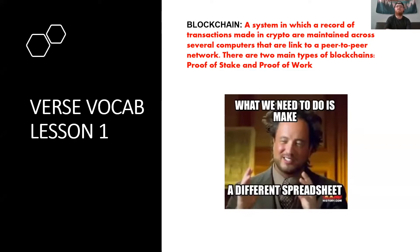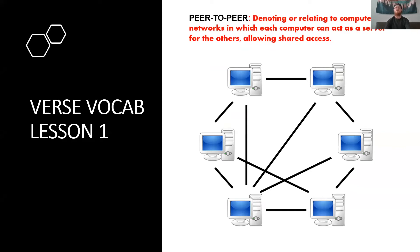There are two main types of blockchains — proof of stake and proof of work — which we'll get into in a later video. Basically what you need to know is that these blockchains act as large spreadsheets held together by computers connected in a peer-to-peer network. In a peer-to-peer network, each computer can act as a server for the others, allowing shared access. This basically means that nobody owns it — it's decentralizing the network. Now some peer-to-peer networks aren't decentralized, like Coinbase, but most things we refer to in blockchain are peer-to-peer and decentralized. Decentralized means it's not controlled or governed by one person or thing — it's controlled by all of the networks.